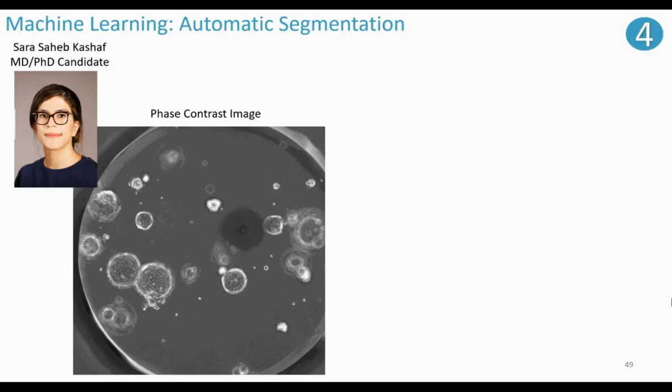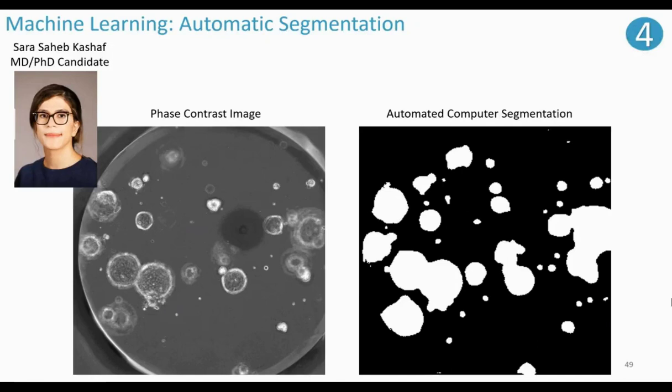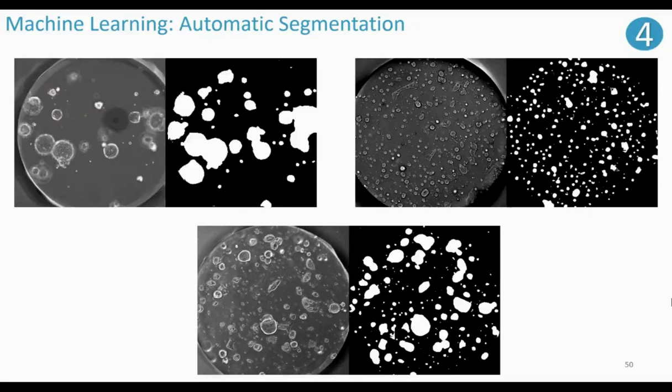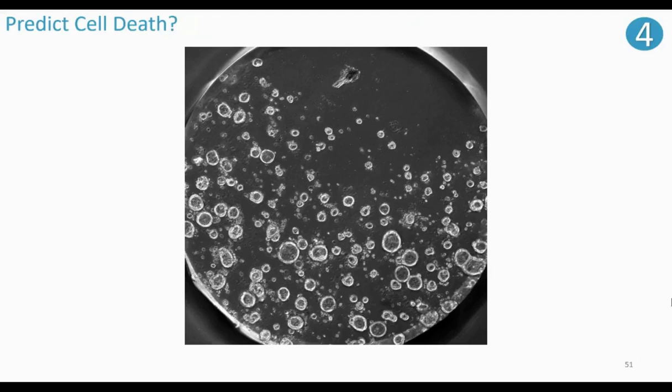Using our model, we've been able to automatically segment organoids using a computer. Even when we throw in images that look different — different cell concentrations, different numbers of organoids, different shapes, sizes, and textures — no matter what we threw at it, the model was able to predict with high accuracy, segmenting the organoids. Using this same technique we would be able to predict cell death, which would prevent the need for fancy fluorescent dyes.